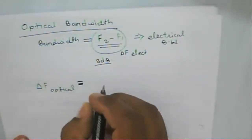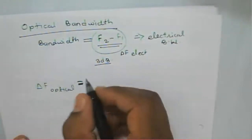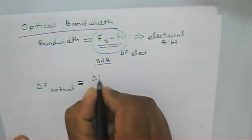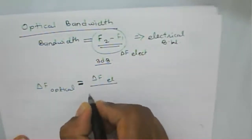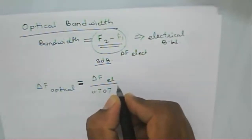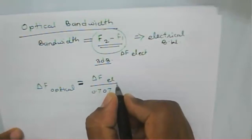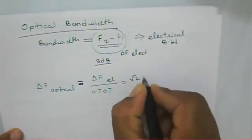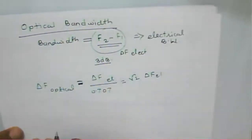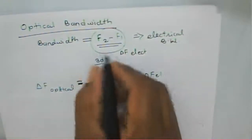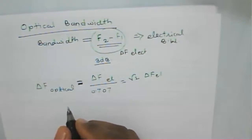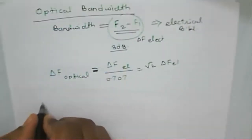In the case of optical bandwidth, we need to consider it with respect to the electrical bandwidth. The electrical bandwidth is expressed in terms of the square root of current values, or delta-f electrical. So instead of directly taking bandwidth in terms of frequencies, we take it in terms of current.